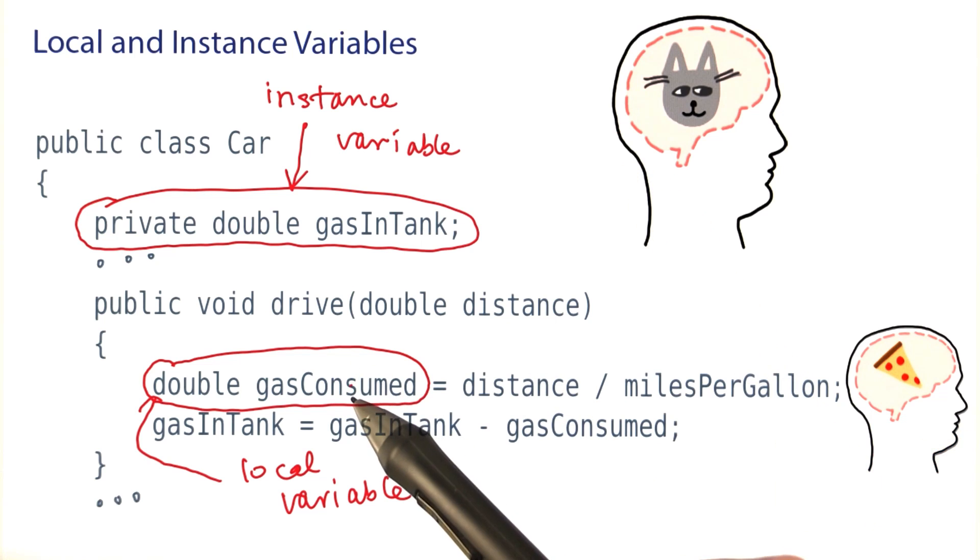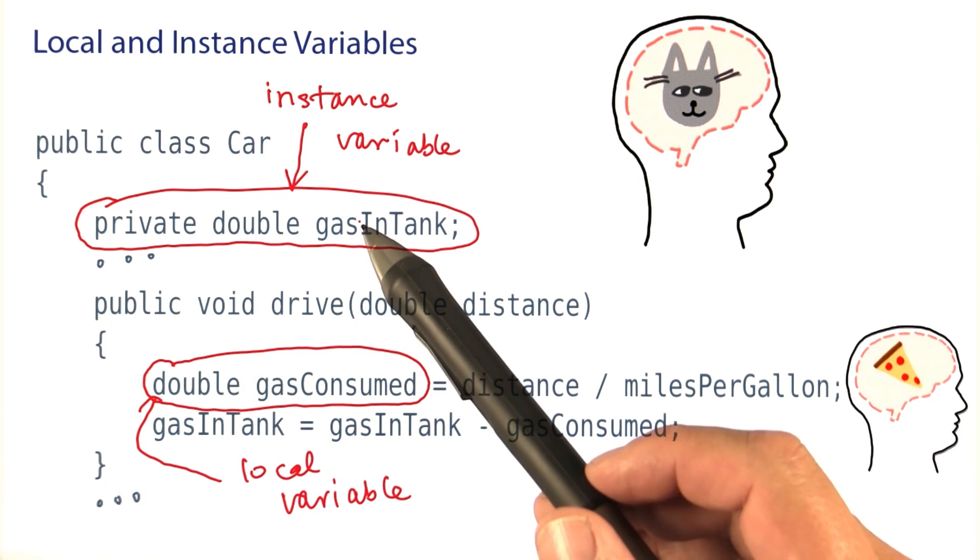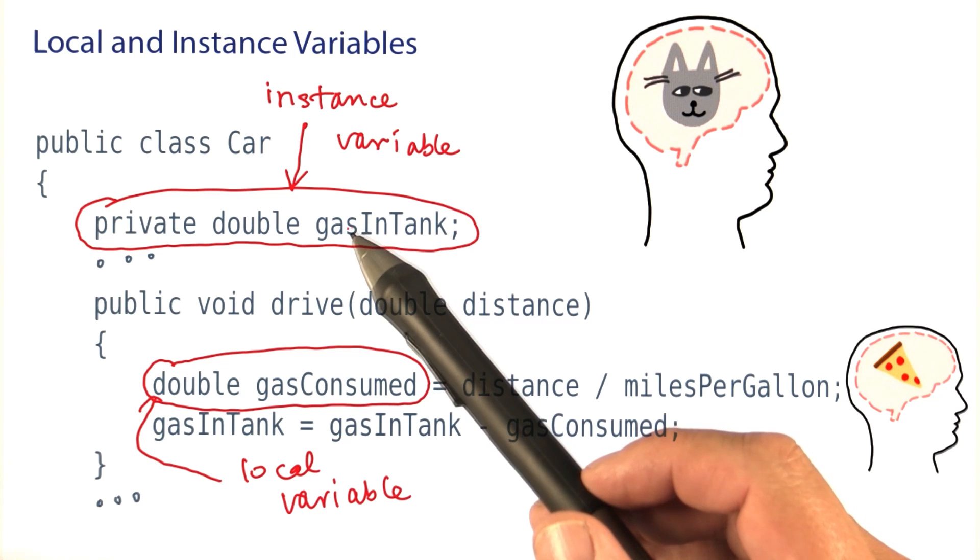Technically speaking, the local variables go away when you reach the end of a method. The instance variables never go away. They stay alive as long as the object is alive.